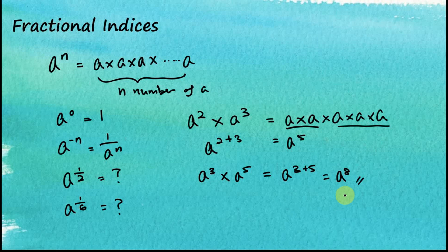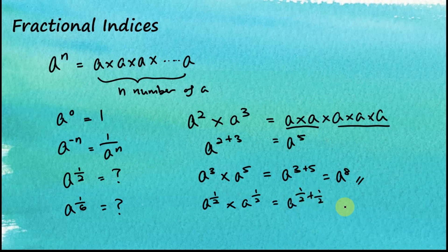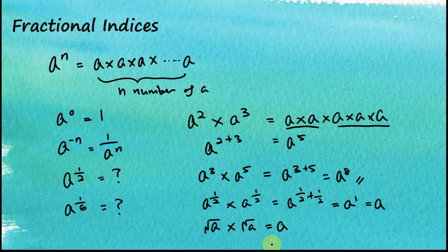Now, what about a to the power of 1 over 2 times a to the power of 1 over 2? We can tell that this equals a to the power of 1 over 2 plus 1 over 2, which equals a to the power of 1, which equals a. In math we also know that the square root of a multiplied by the square root of a equals a. Comparing these two results, we can conclude that a to the power of 1 over 2 is equal to the square root of a.